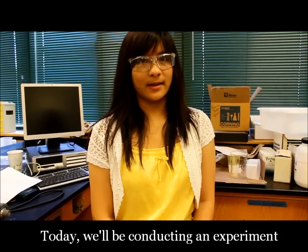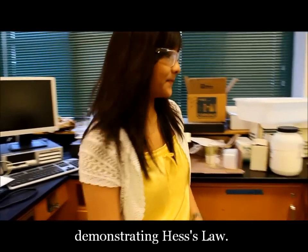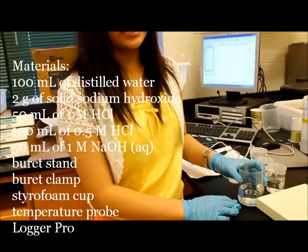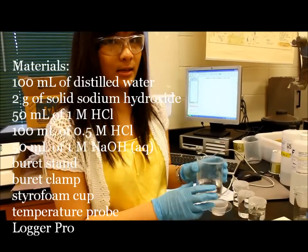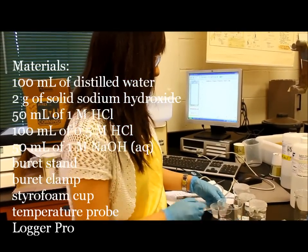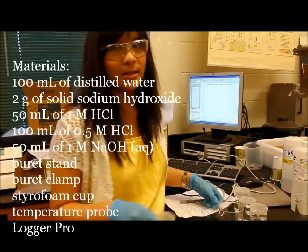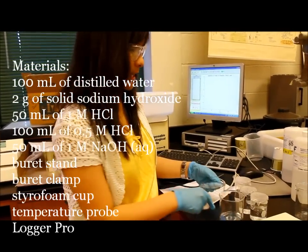Today we'll be conducting an experiment demonstrating Hess's Law. The materials we're going to need include 100 milliliters of distilled water, approximately 2 grams of solid sodium hydroxide.